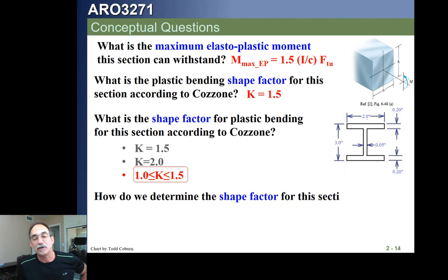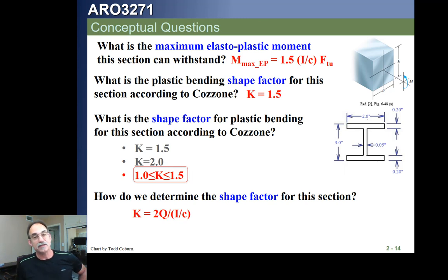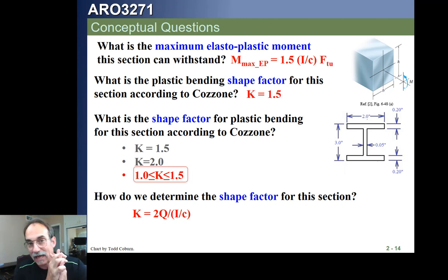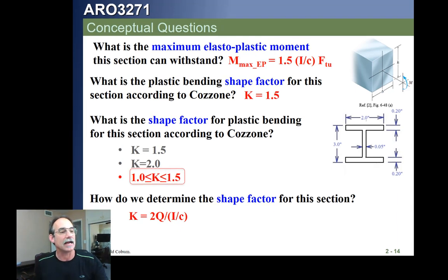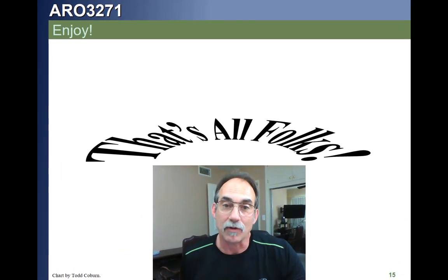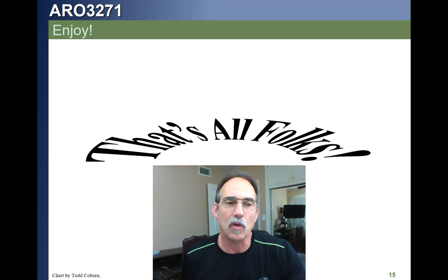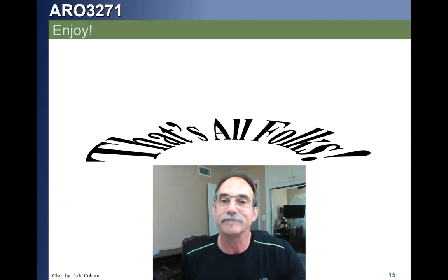To determine the Cozzone shape factor for a specific section, calculate 2Q over (I/C). That means you must know how to calculate Q — the first moment of the area on everything on one side of the neutral axis, which we learned in statics. Make sure you do the homework as many times as you need to in order to understand this.